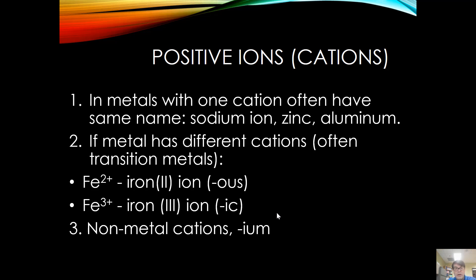If you have a nonmetal cation, you put -ium on it. Hydrogen isn't really a metal, so the H plus one ion is called the hydronium ion. That pretty much sums up the naming conventions for cations — the positive ions that are usually first in the formula.